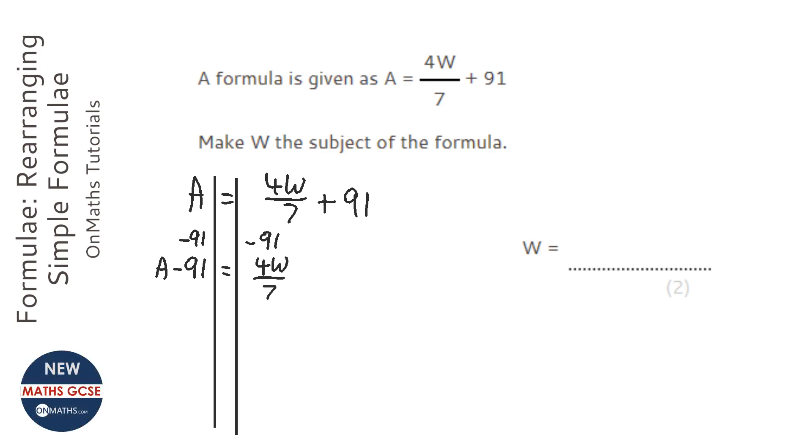Now, we want to get rid of that fraction, so to do that we're going to times both sides by 7. Now, I could write 7A minus whatever 91 times 7 is, or I could just leave it in a bracket, and that's absolutely fine.